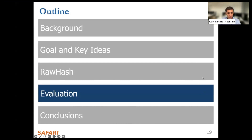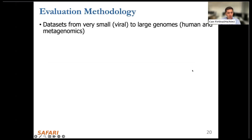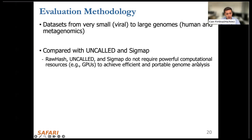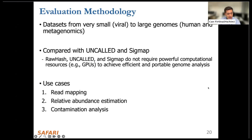Here is our evaluation methodology. We use datasets from very small, for example viral, to large genomes — human and metagenomic datasets. We compare RawHash with Uncalled and Sigmap. RawHash, Uncalled, and Sigmap do not require powerful computational resources such as GPUs to achieve efficient and portable genome analysis in real time. We also have three use cases: read mapping, relative amounts estimation, and contamination analysis.